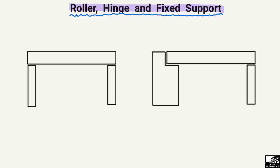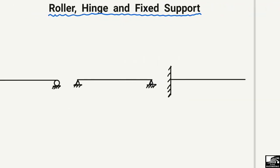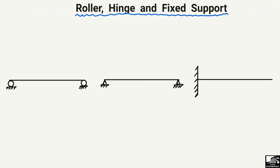In order to clarify the main difference between these types of supports, we first have to understand the theory behind them. The three different types of supports are shown here by graphical representation: the roller support, the hinge support, and the fixed support.